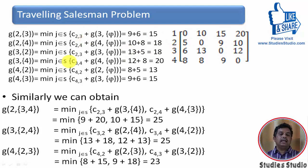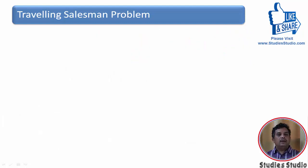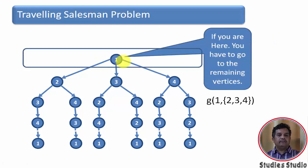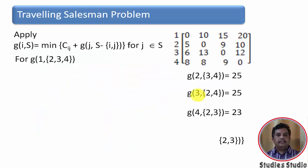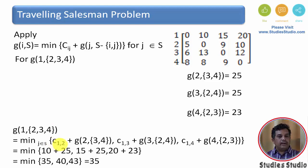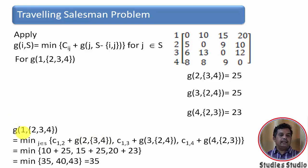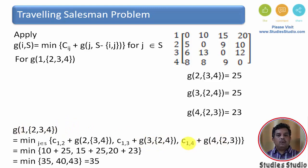Now I need to find g(1,{2,3,4}): C_12 + g(2,{3,4}), then C_13 + g(3,{2,4}), and C_14 + g(4,{2,3}). When vertex 2 is chosen, we subtract 2 from {2,3,4} leaving {3,4}; when vertex 3 is chosen we subtract to get {2,4}. All these intermediate values have already been calculated.